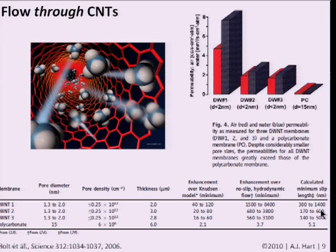Earlier work from 2005 studied flow through multi-walled nanotubes. It's not well established how flow rate scales with diameter across different sizes, though high slip has been shown for nanotubes up to about 20 nanometers. They tested many liquids—water and organic solvents—finding fairly high slip, with the highest slip for water. Rather than reporting enhancement over no-slip, these researchers compared observed flow velocity to effective flow velocity. Note that the slip length highlighted in the table—this is the number to use in the problem set—is actually in microns, not millimeters. Even so, 54 microns is a huge slip length for such a small geometry.